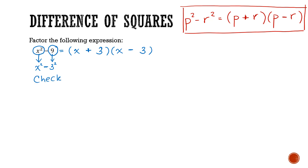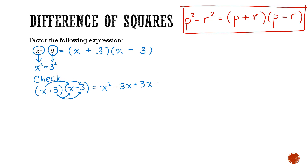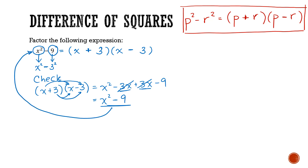We can always perform a check on our factorization by multiplying out the brackets — what we often refer to as foiling an equation. x times x gives x squared; x times minus 3 gives negative 3x; 3 times x gives positive 3x; and 3 times negative 3 gives negative 9. Collecting like terms: 1x squared, negative 3x plus 3x cancel to 0, leaving just negative 9. This is the same as the equation we started with, so it checks out.